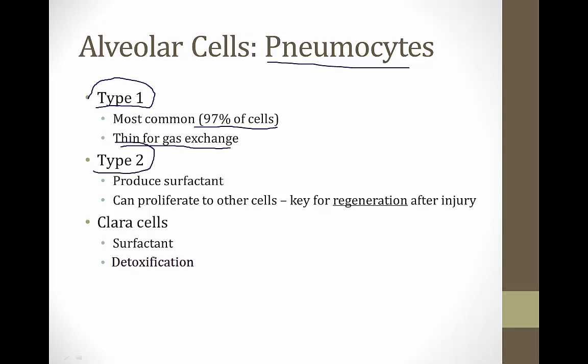Type 2 cells have a very important function: they produce surfactant, which we'll discuss shortly. They're also cells that can proliferate to become other cells, making them very important for regeneration after injury. It is high yield to know that type 2 cells make surfactant and regenerate the lungs in response to injury.